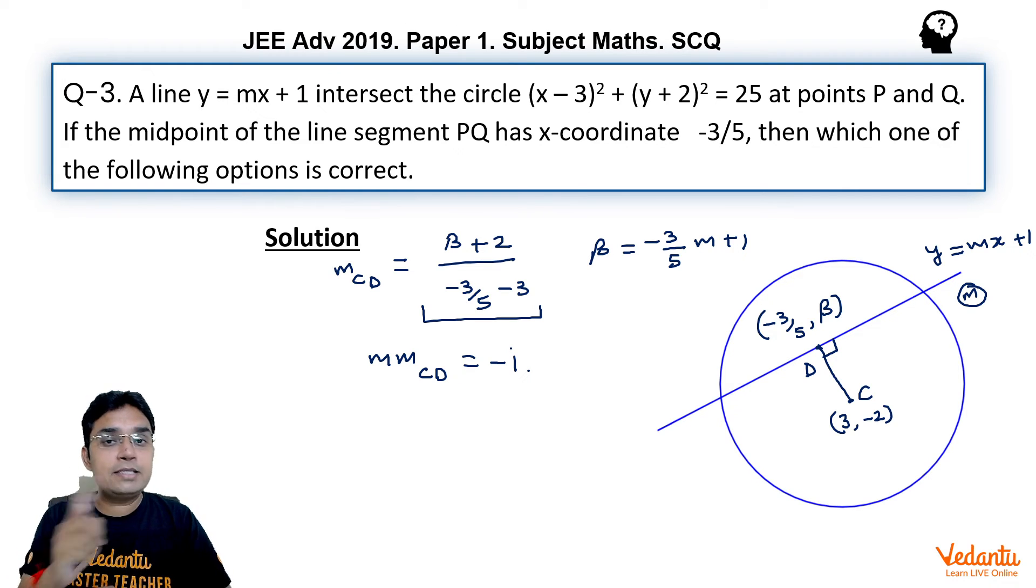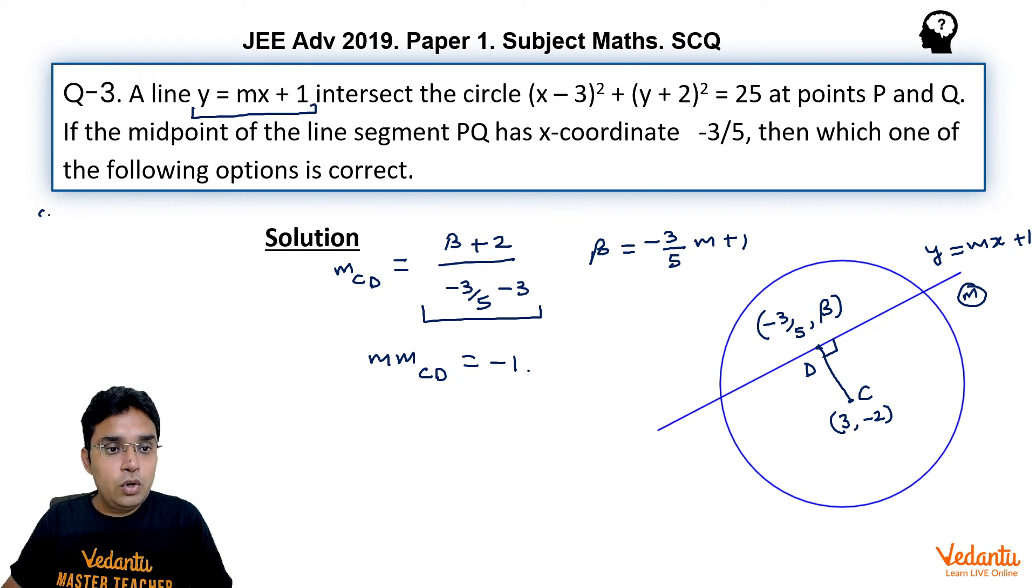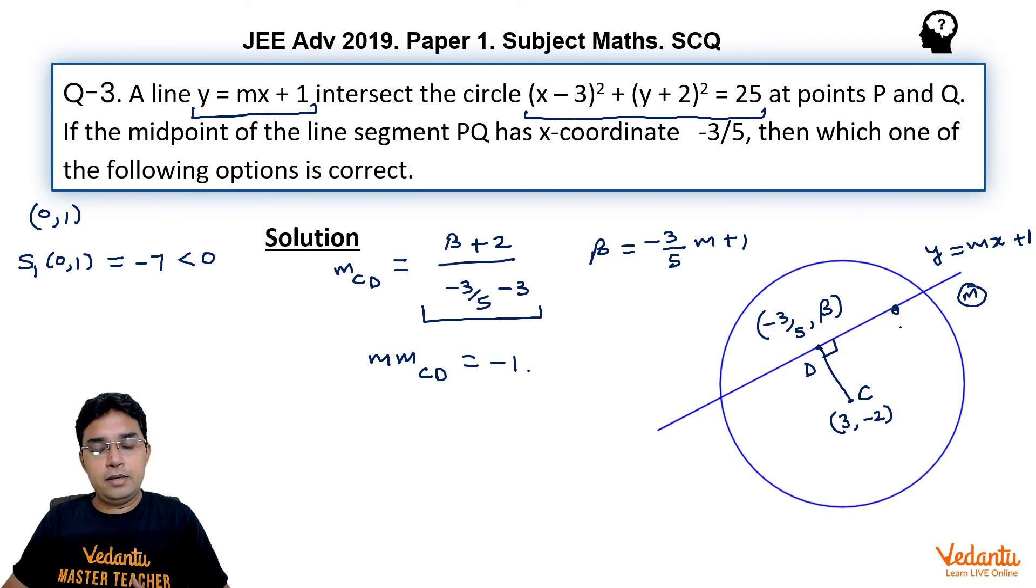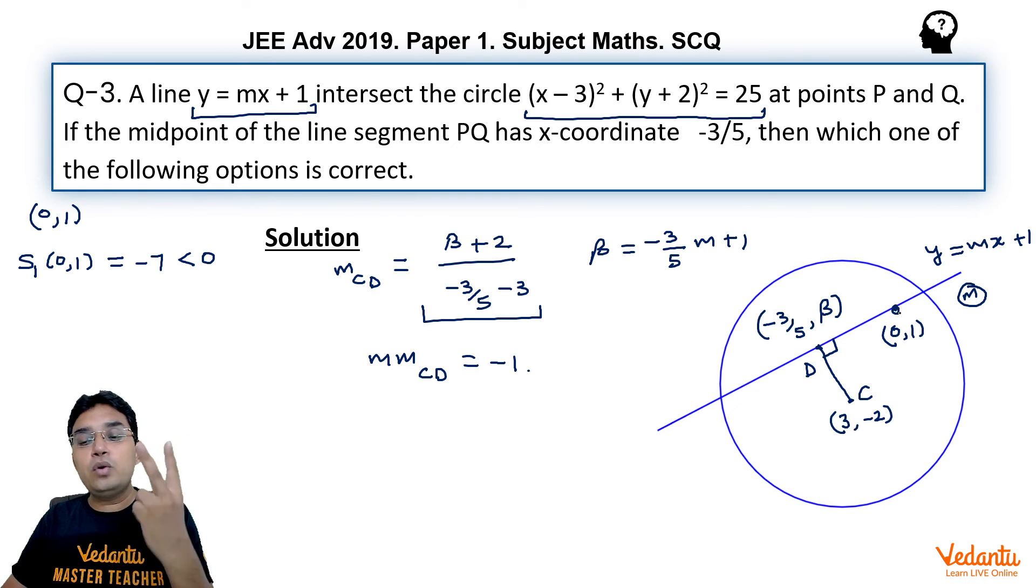Now, I will tell you one interesting fact about this question. Please listen carefully. This is that line is passing through (0, 1) for all possible values of m, you can check. Now, if I put (0, 1) in the equation of this circle, you can check the value of S₁ corresponding to this point (0, 1) comes out to be minus 7 which is negative, which means this point should lie inside the circle somewhere here, which means I choose any value of m, this line passing through (0, 1) is going to intersect the circle at two real points always.